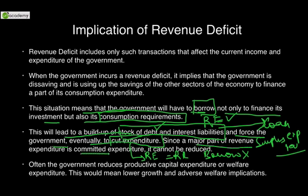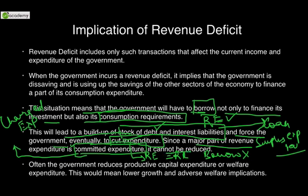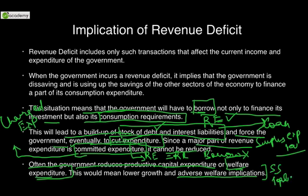Since a major part of revenue expenditure is committed expenditure — a term from polity also known as charged expenditures — these are constitutionally mandated: salaries of CAG, CVC, CEC, Supreme Court judges, running of parliament. All these are committed expenditures that cannot be reduced. So what can be reduced has to be cut. Often the government reduces productive capital expenditure or welfare expenditure. As a welfare state, India spends a lot on welfare — MGNREGA, National Food Security Act for 67% of the population. Cutting these would mean lower growth and adverse welfare implications, with negative political consequences.